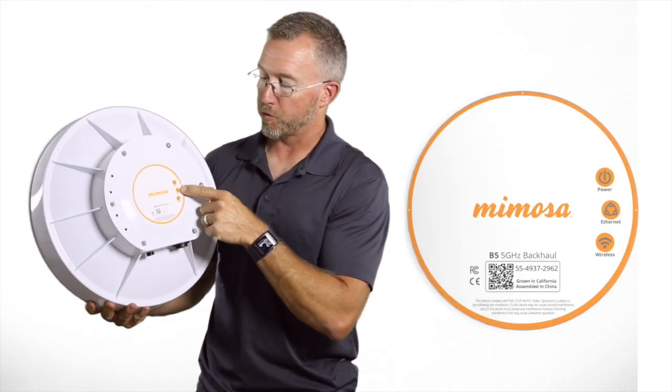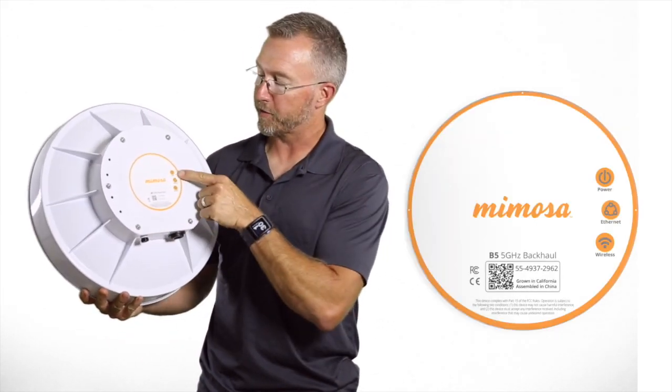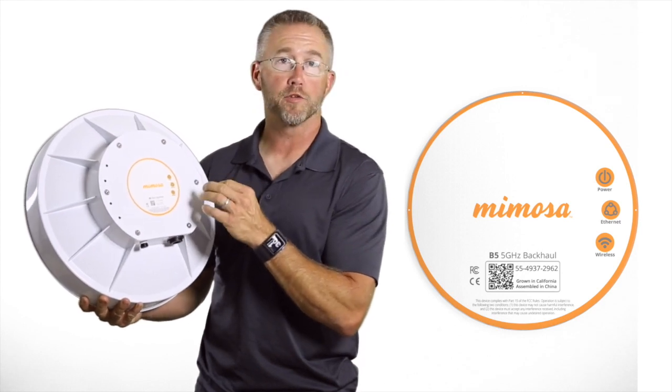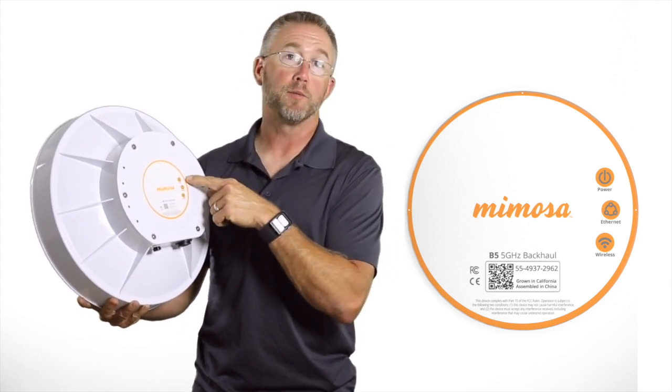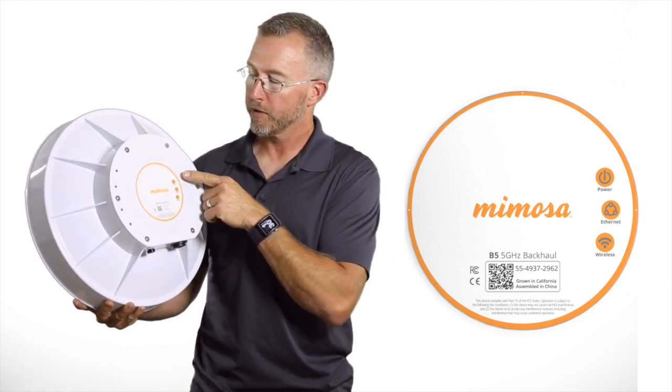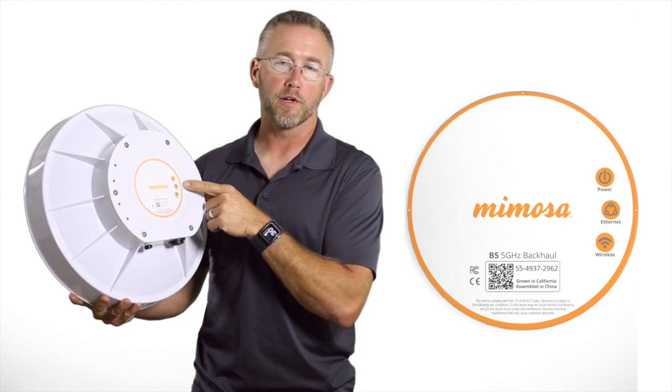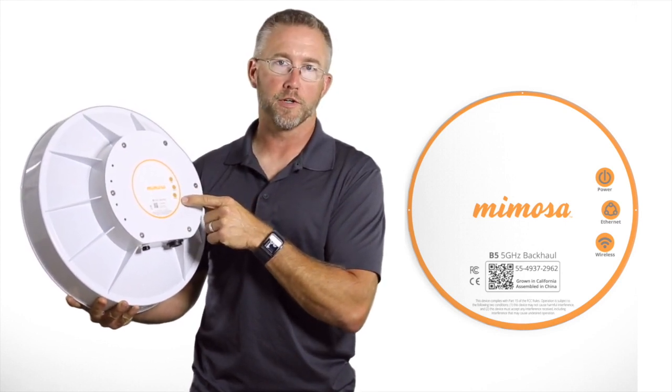The status lights, which are not on right now, are very clear. They're very bright and visible from a great distance. So you don't have to worry about crawling up the tower or to a rooftop to see the status lights. You've got power, network activity, and wireless activity as your indicators.